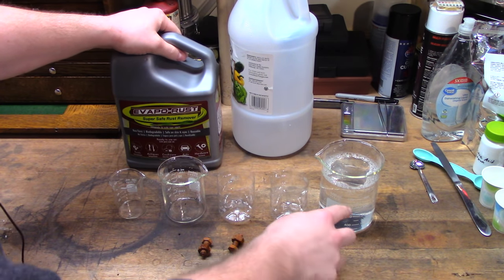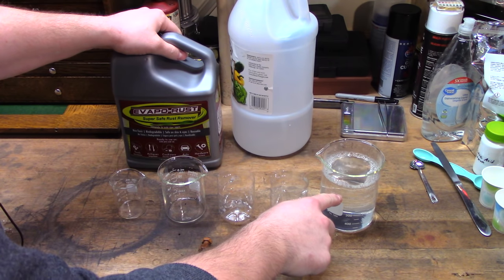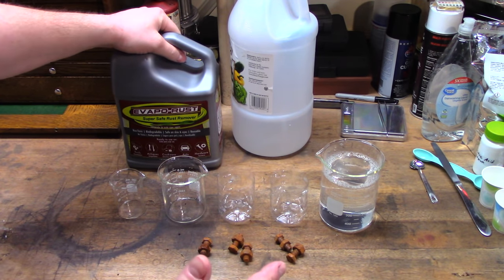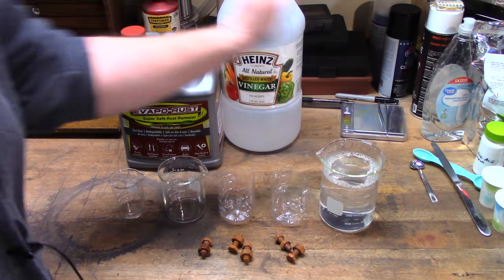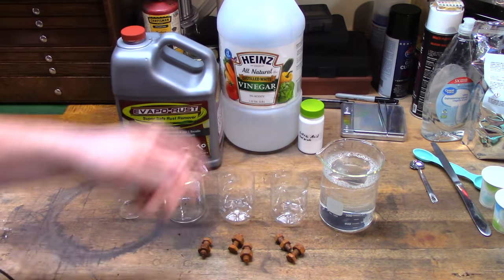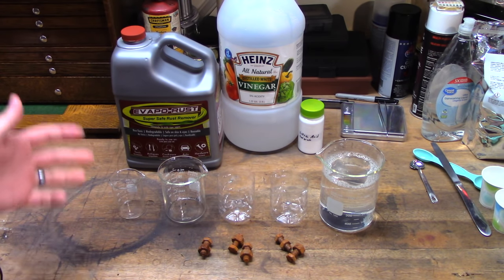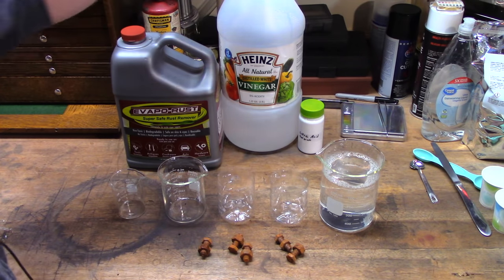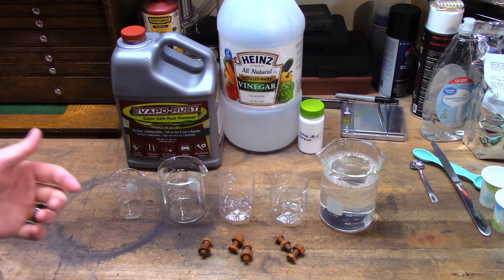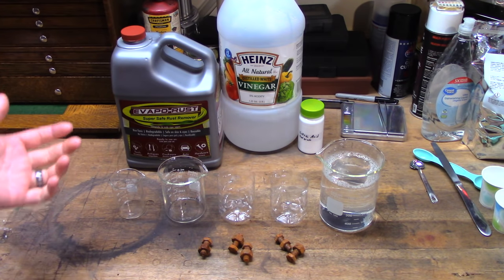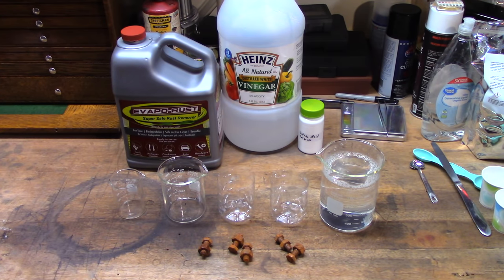What we're gonna test is obviously Evaporust versus our homemade solution. Again, I'm gonna tell you this does take an extra day. But, I think it works just as well. Then, we're also gonna test some vinegar and citric acid solution. There were a couple people on the last video who almost had a stroke because I didn't test vinegar or citric acid. Also, quite a few people saying phosphoric acid. I do not have any phosphoric acid. So, I can't test that one. But, let's get these all soaking and see what they do.